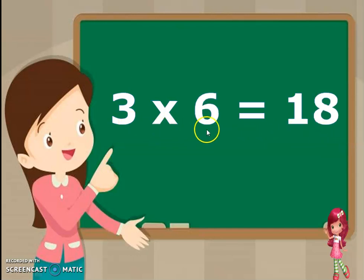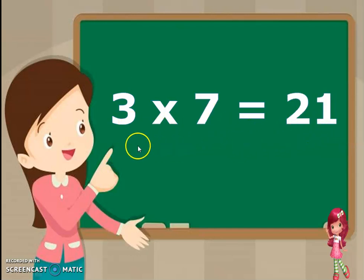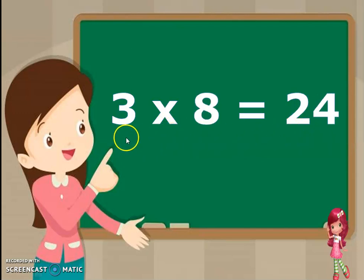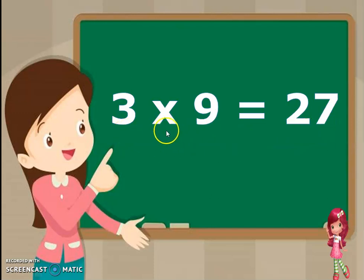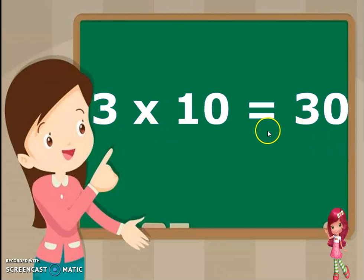3 6's are 18. 3 7's are 21. 3 8's are 24. 3 9's are 27. 3 10's are 30.